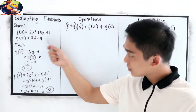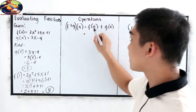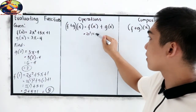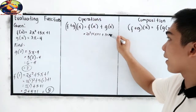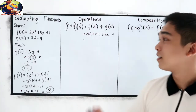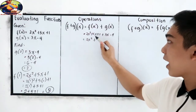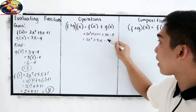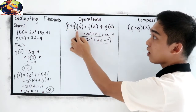Using the same given functions: f(x) = 2x² + 5x + 1 and g(x) = 3x − 4. Now combine like terms: 2x² + 5x + 3x is 8x, then copy minus 1. So (f + g)(x) = 2x² + 8x − 1.